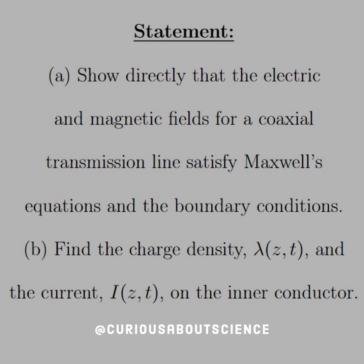The statement is: show directly that the electric and magnetic fields for a coaxial transmission line satisfy Maxwell's equations and the boundary conditions. Find the charge density, lambda z of t, and the current, i z of t, on the inner conductor.